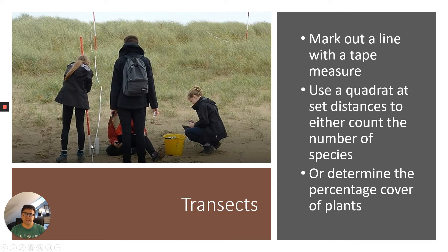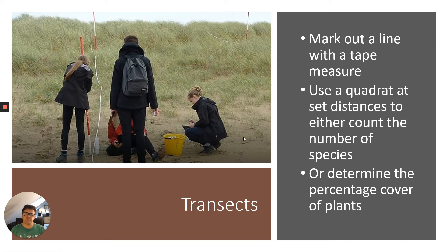In a transect, you mark out a line with a tape measure. This example shows A-level students doing a sand dune succession study. You place a quadrat at set distances to either count the number of species or determine the percentage cover of plants over a set distance. You'd also measure other factors such as wind speed, temperature, soil moisture, salt content, pH, and humus levels.